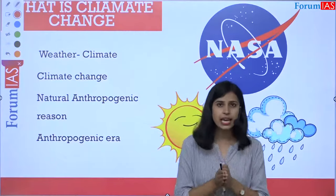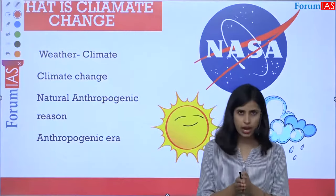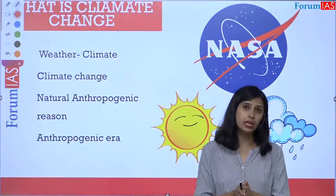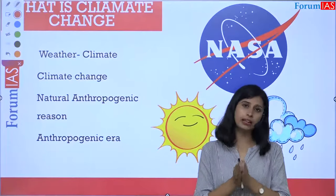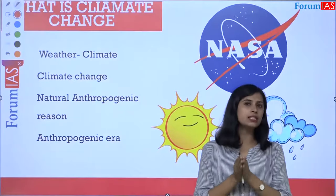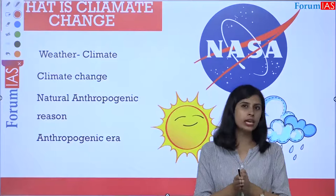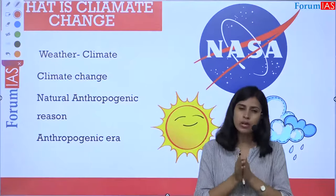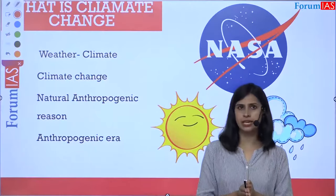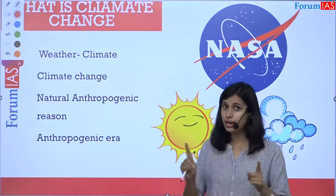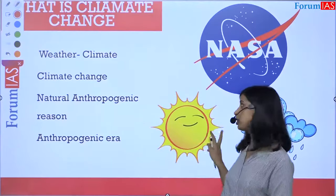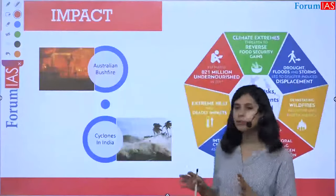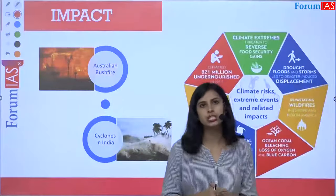The current era is called the anthropogenic era — meaning human activity is so influential that the era is named after humans. That is the understanding of climate change. Now let us understand what is the impact of climate change.